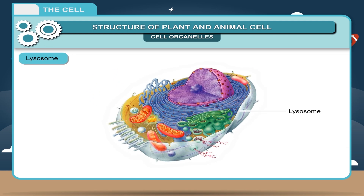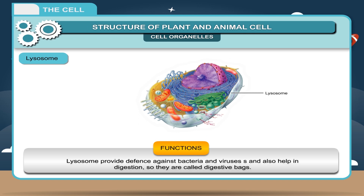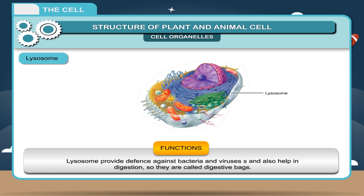Lysosome. They occur only in animal cells and have sac-like structures. They contain some digestive enzymes. Lysosomes provide defense against bacteria and viruses and also help in digestion, so they are called digestive bags.